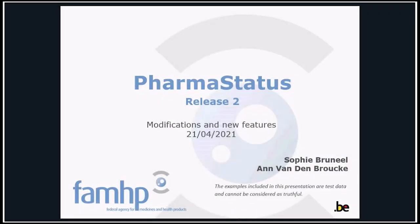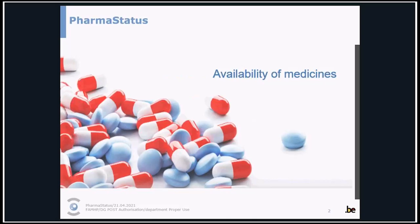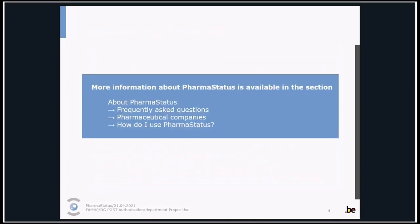Welcome to the demo of the second release of PharmaStatus. My name is Anne van den Broeke, and I work at the Federal Agency for Medicines and Health Products. Together with my colleague Sophie Bruneel, we have been working on the extension of this application. PharmaStatus is an online application that collects information about the availability of medicines in Belgium. This presentation is meant to give an overview of the changes compared to the previous version; it will not cover all functionalities. The complete manual is available on the website.